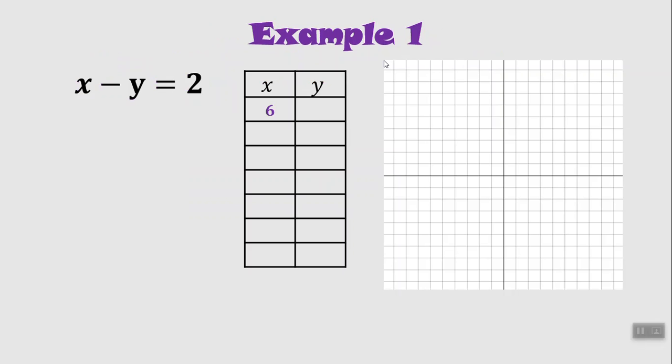So what if we had an x value of 6? 6 minus 4 would make 2, so we know that 6, 4 is a solution to the equation. What if the x value is 5? 5 minus 3 makes 2. What if the x value is 4? 4 minus 2 makes 2, so these are all solutions to this equation.